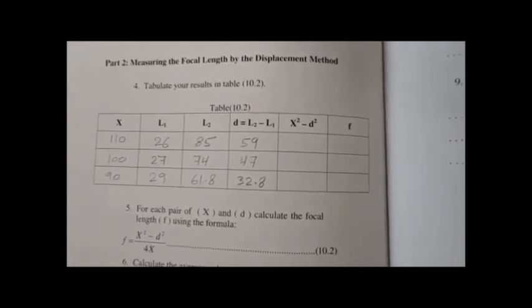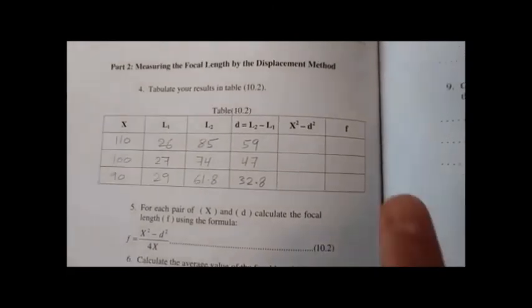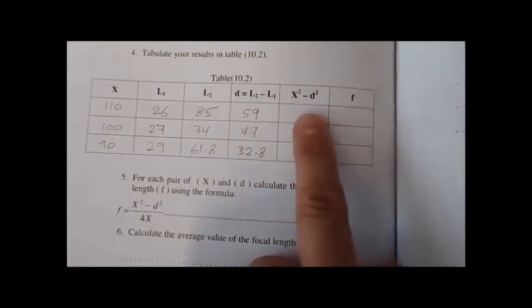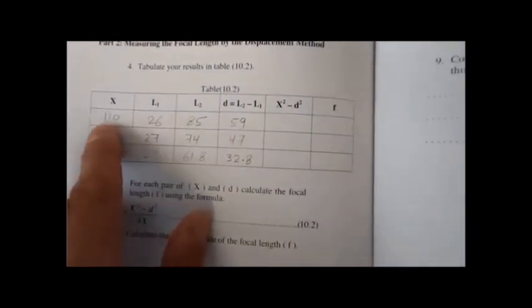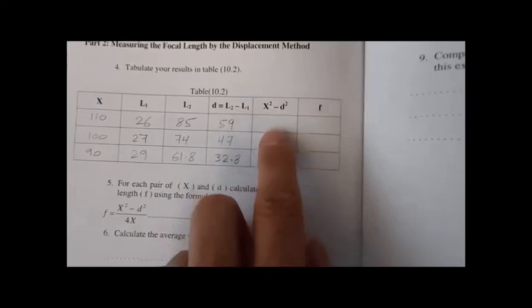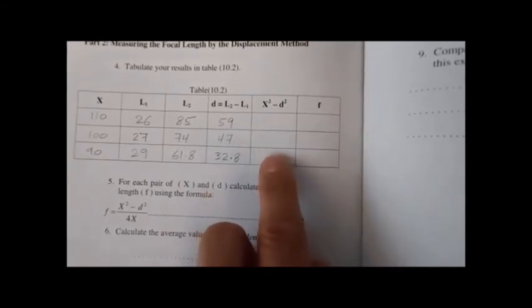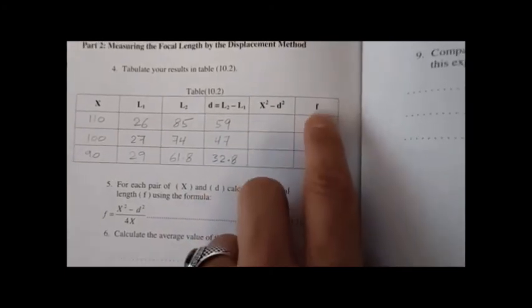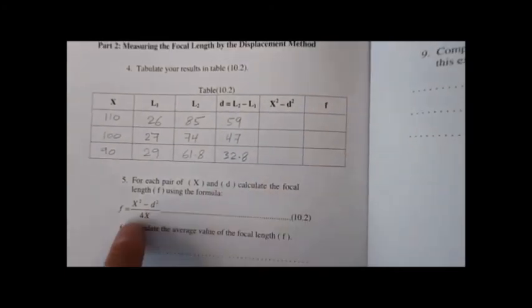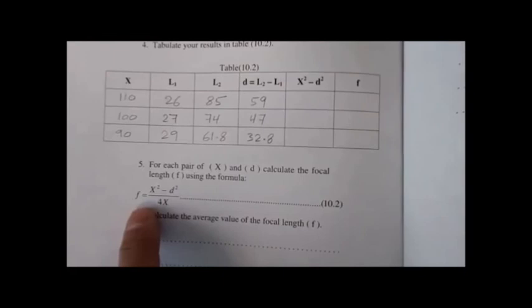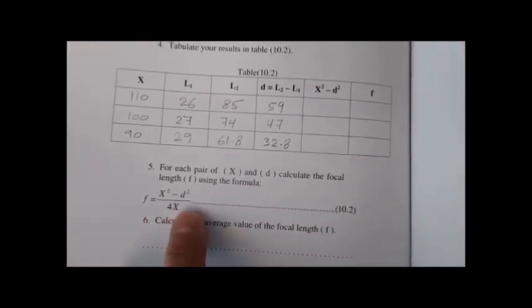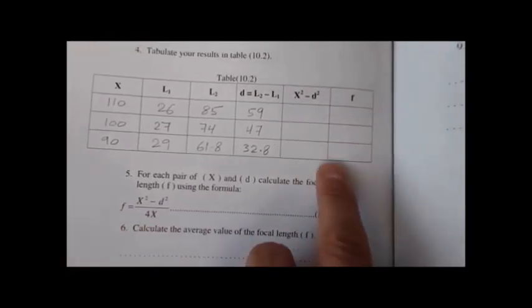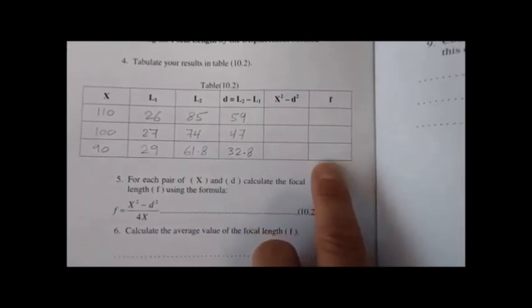Now you need to calculate X squared minus D squared. For each measurement, calculate F from the formula: F equals (X squared minus D squared) divided by 4X. You will get three values of F from which you can calculate the average.